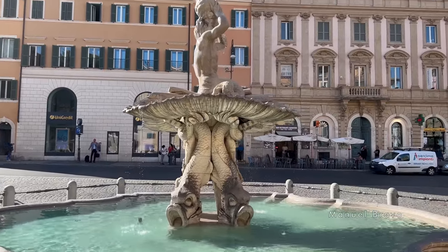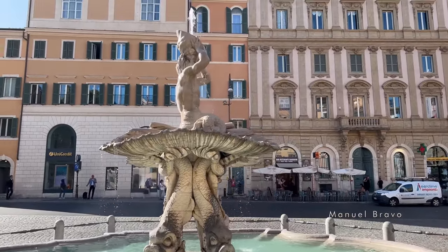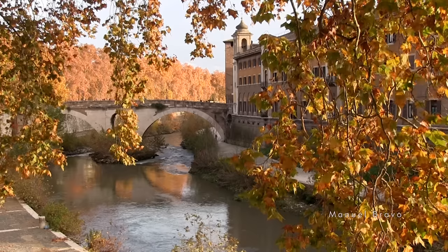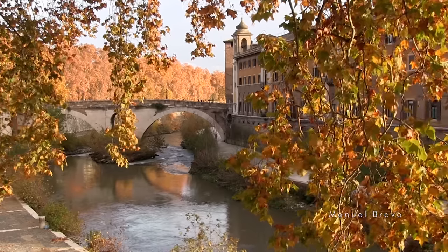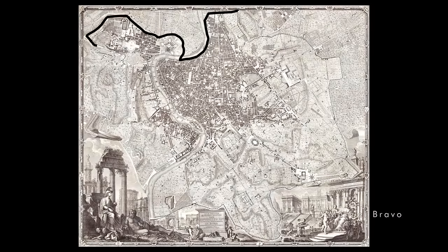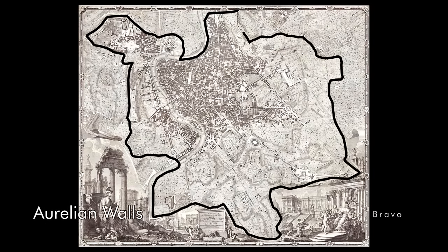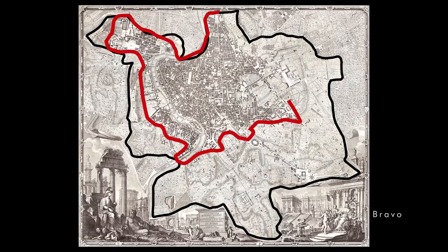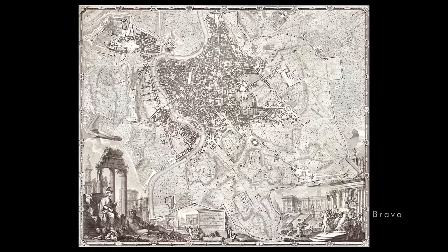Sixtus V also drained marshes that had been breeding grounds for malaria mosquitoes, and reestablished roads and bridges that had fallen into disrepair. The Aurelian wall, built by the Roman emperor Aurelian in the 3rd century, shows how large ancient Rome once was — and how much smaller it had become by the Renaissance and Baroque period. This was a big disappointment if you happened to be the pope, so Sixtus V undertook this big project of urbanism.